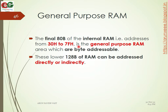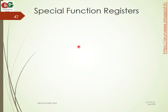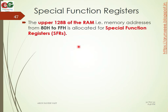The other two sections are the bit addressable RAM and general purpose RAM. There is also a special function registers section. The upper 128 bytes of RAM is allocated for special function registers, also known as SFR.